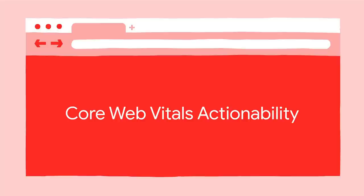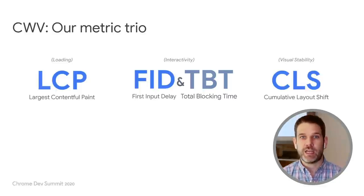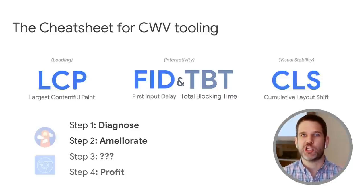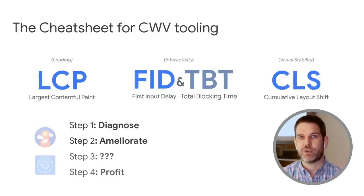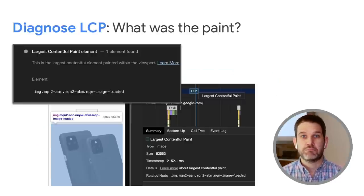Moving on to Core Web Vitals actionability. It's important to us that you're equipped with the tools to not only measure how you're doing with Core Web Vitals, but to actually improve them. For each of these metrics, I'm going to go through two key steps: we're going to diagnose what's going on, and we're going to ameliorate or make them better. So, LCP — let's diagnose it. The key question is, what was the largest contentful paint? In Lighthouse, you can look at this specific audit and it'll tell you the DOM element associated with the largest contentful paint.